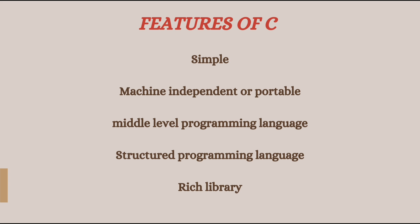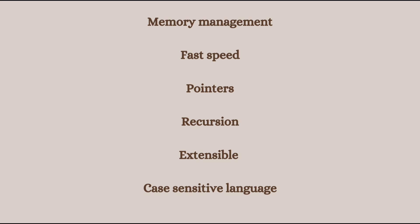C is machine independent or portable — a C program is easy to execute on different machines. As mentioned, C is also known as a middle-level language. C also supports dynamic memory allocation. The next feature is fast speed — compilation and execution time is very low.